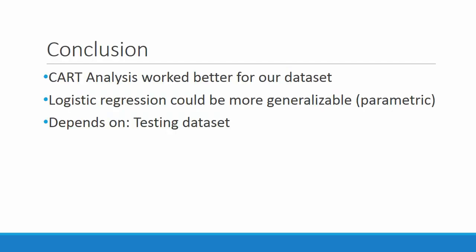To conclude, we want to reiterate that CART analysis worked best on our dataset, whereas we have statistically significant evidence that logistic regression works best for the entire population. We were not able to test our CART model against another dataset to assess its robustness, so we have no indication of how well it works universally. Since logistic regression is a parametric test, we can infer that it can be used on other populations and will predict similar outcomes. If, however, we were able to test our CART model on another dataset, we may be able to have a more accurate global predictor.